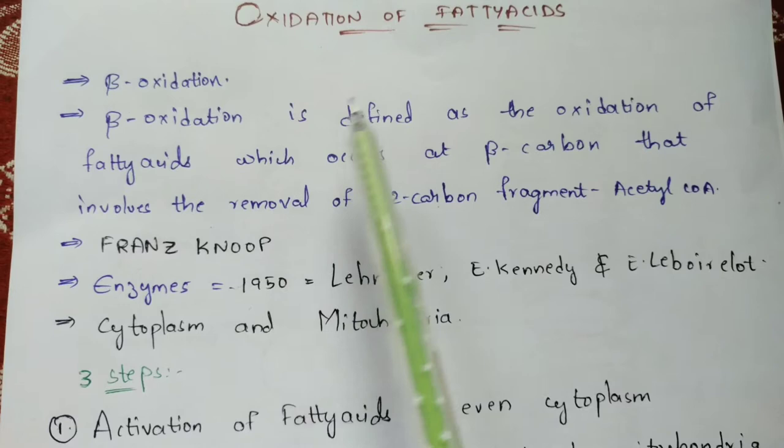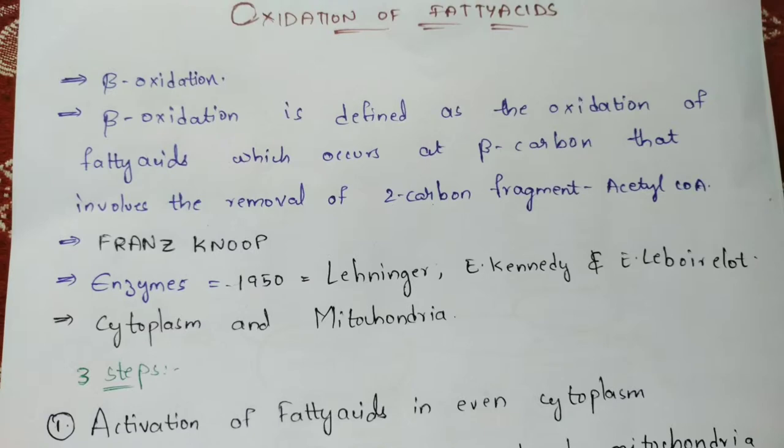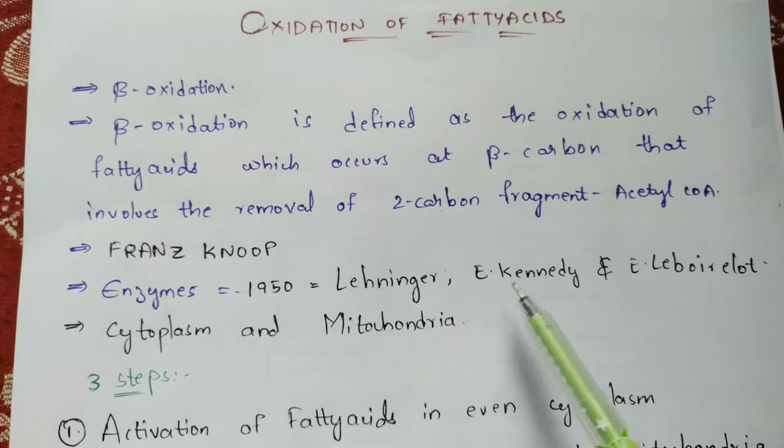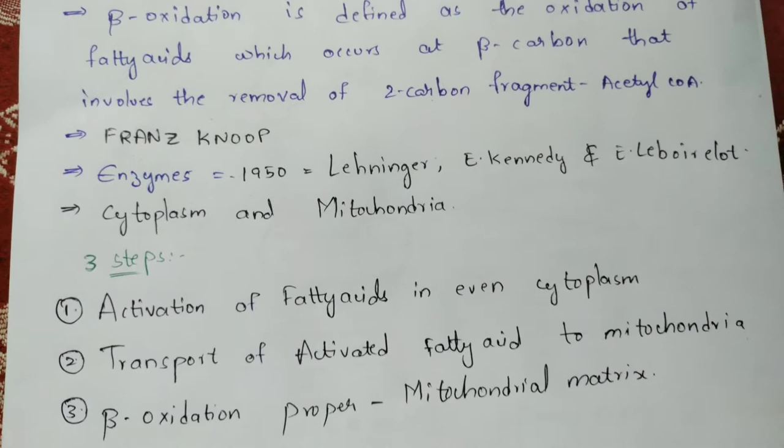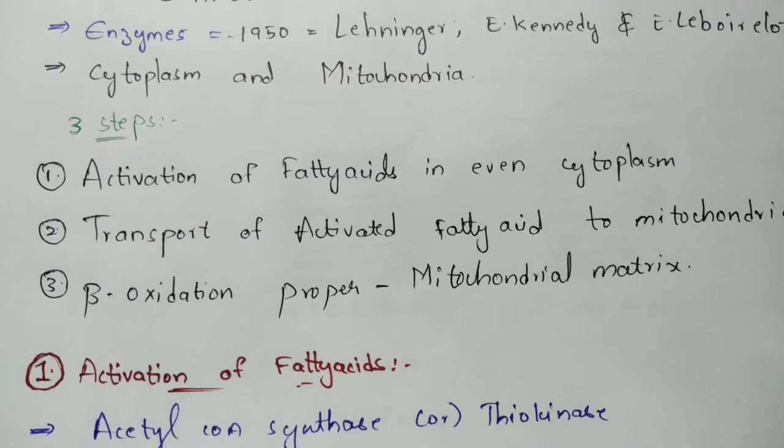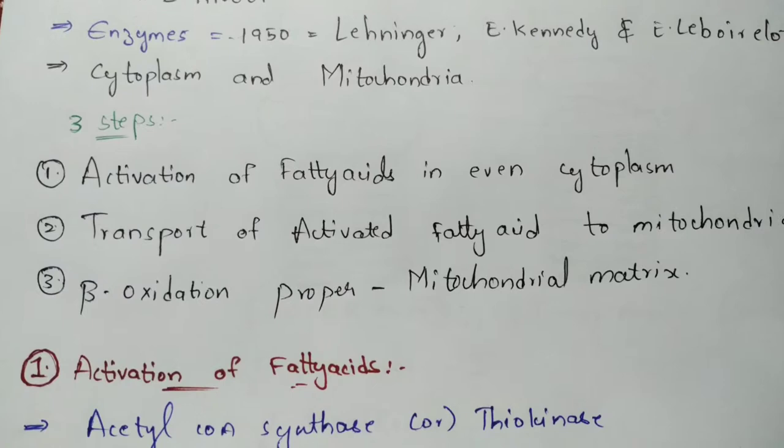The enzymes involved in the oxidation of fatty acids were discovered in 1950 by three main scientists: Lehninger, Kennedy, and Lynen. This oxidation of fatty acids occurs in both the cytoplasm and the mitochondria, and it occurs in three steps: first, activation of the fatty acid in the cytoplasm; second, transport of the activated fatty acid to the mitochondria; and third, the beta oxidation process.